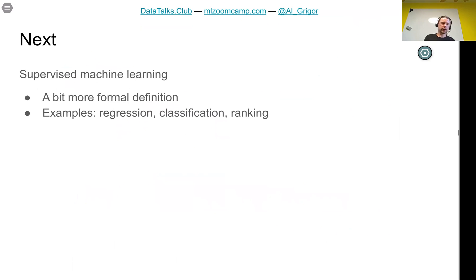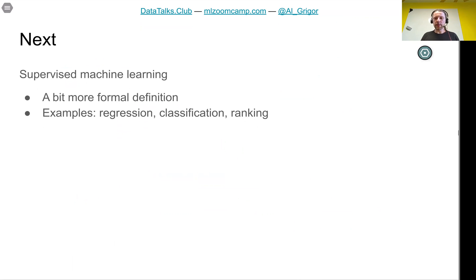We talked about the spam classification example and illustrated the difference between rule-based systems and machine learning. In the next lesson we will talk about supervised learning — examples like price prediction and spam prediction are examples of supervised machine learning. We will formalize this concept and discuss different kinds of supervised machine learning: regression, classification, and ranking.